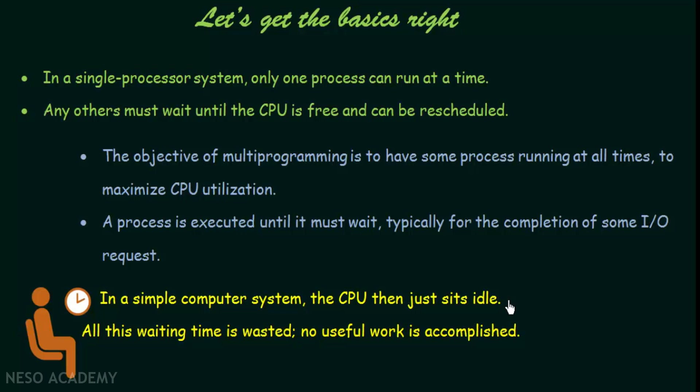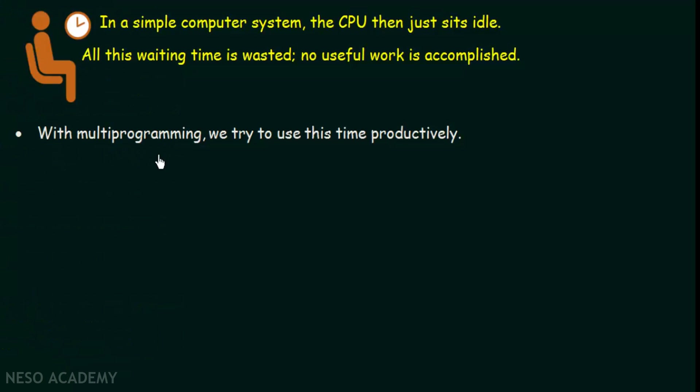The basic need for CPU scheduling is to avoid this. We don't want the CPU to sit idle at any time. If there are processes available, we want the CPU to be utilized as much as it can be. With multiprogramming, we try to use this wasted time productively — the time when the CPU is not doing any useful work — and make it productive through CPU scheduling.